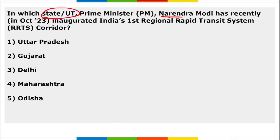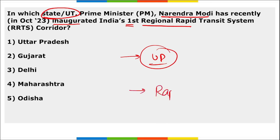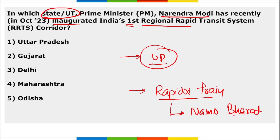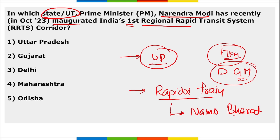Next, in which state or UT did Prime Minister Narendra Modi recently inaugurate India's first Regional Rapid Transit System? It was inaugurated in Uttar Pradesh, and he also flagged off a rapid X train named Namo Bharat. This is a 17-kilometer priority section of the Delhi–Ghaziabad–Meerut corridor. The whole RRTS project is 82.15 kilometers, but as of now only 17 km has been opened.